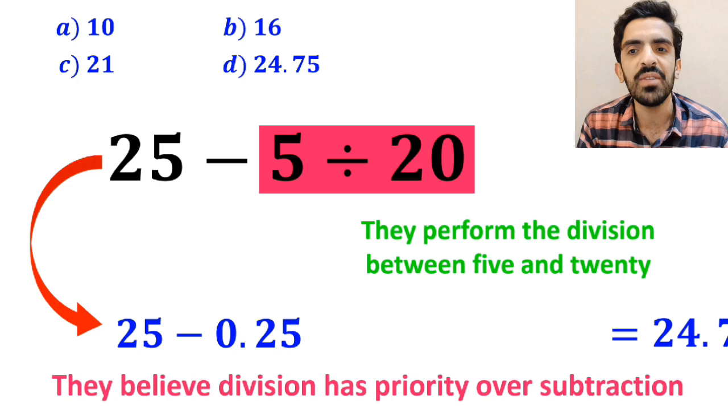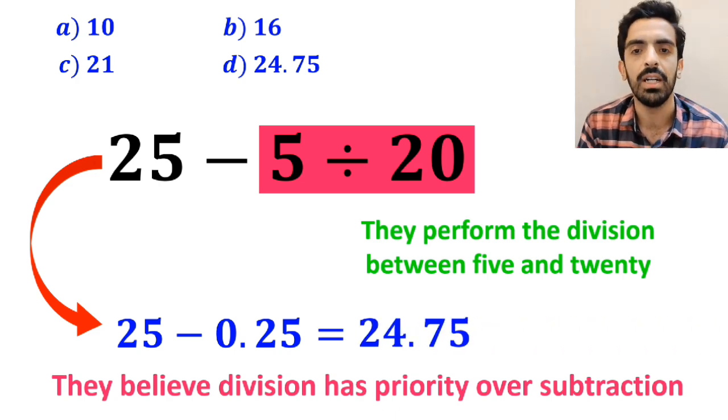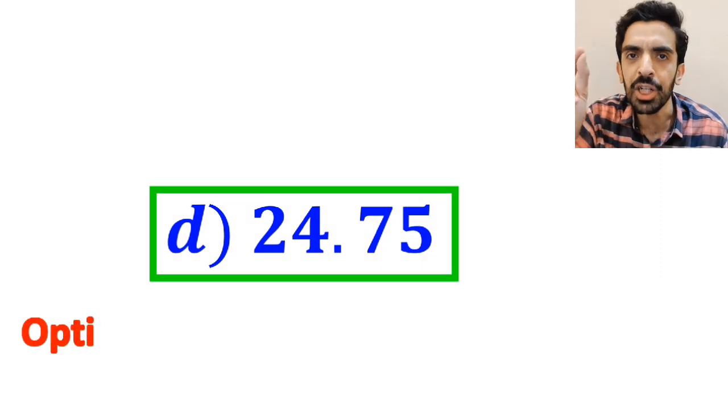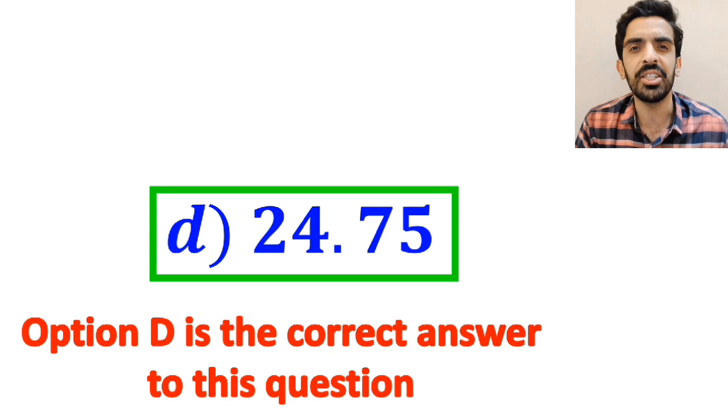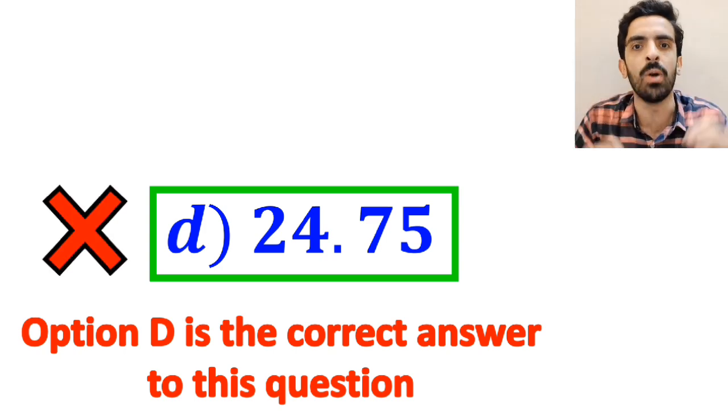Which ultimately gives them the answer 24.75. And immediately they conclude that option d is the correct answer to this question. But this answer is absolutely wrong.